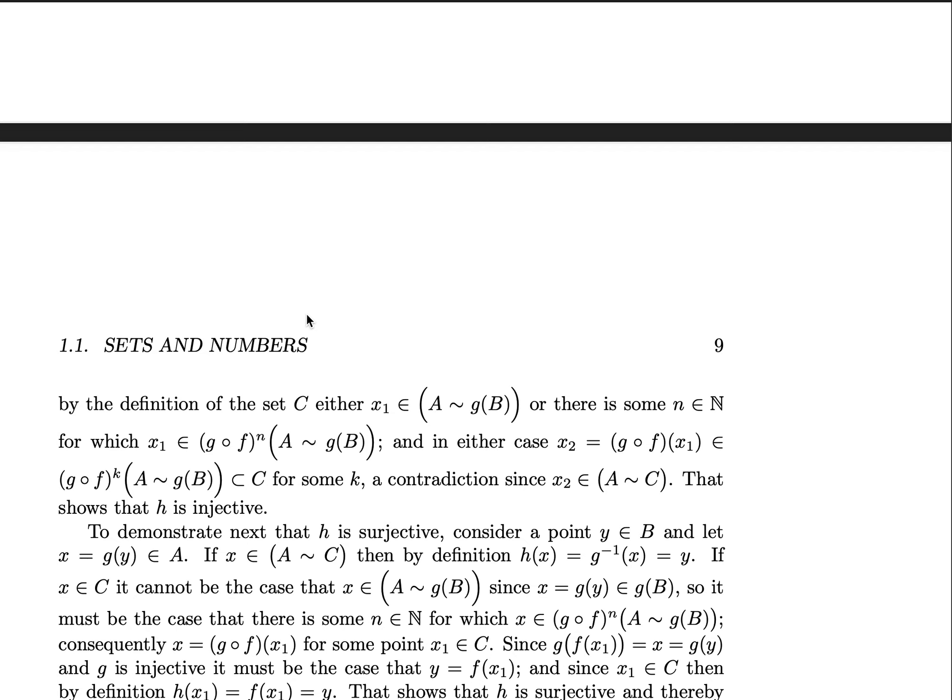And you have it that x₂ is in g(f(x₁)) is a subset of all those numbers k that are natural numbers. There's a contradiction. Clearly, since x₂ is inside A except for C. And that shows, since we've eliminated all three cases, that h must be injective.